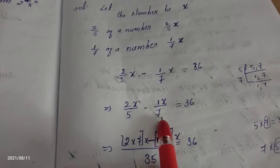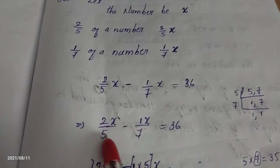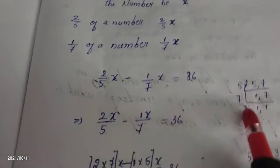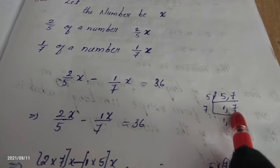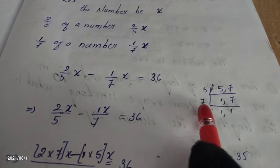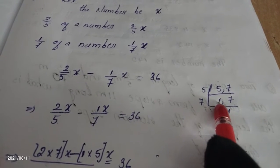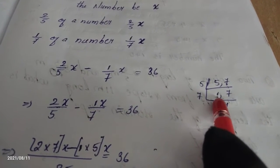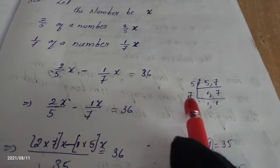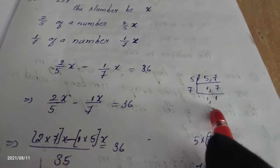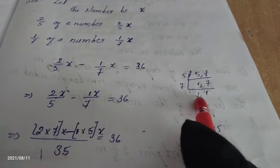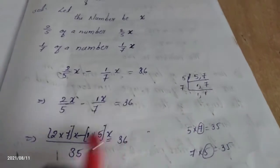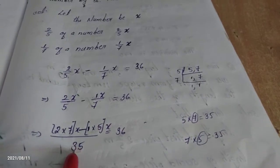We have to take the LCM of the denominators 5 and 7. In 5's table: 5 is 5, but 7 is not divisible by 5, so we keep it as is. Then taking 7: 1 is not divisible by 7. The overall LCM is 5 × 7 = 35.